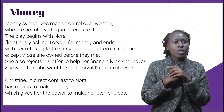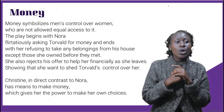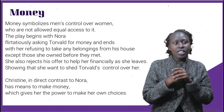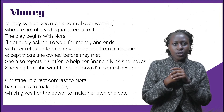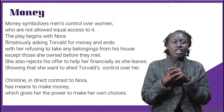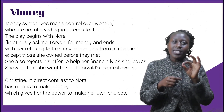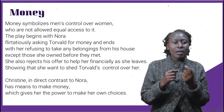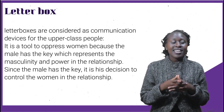Money is another symbol in the text. Money symbolizes men's control over women, who are not allowed equal access to it. The play begins with Nora flirtatiously asking Torvald for money and ends with her refusing to take any belongings from his house except those she owned before they met. She also rejects his offer to help her financially as she leaves, showing that she wants to shed Torvald's control over her. Christine in the play, in direct contrast to Nora, has means to make money, which gives her the power to make her own choices.